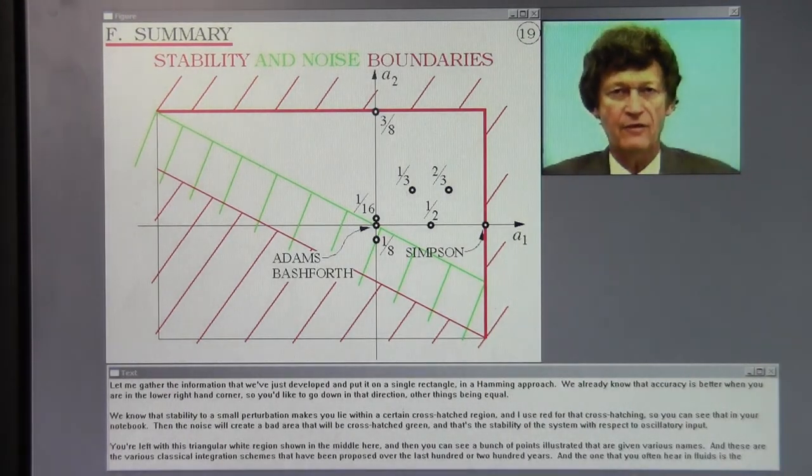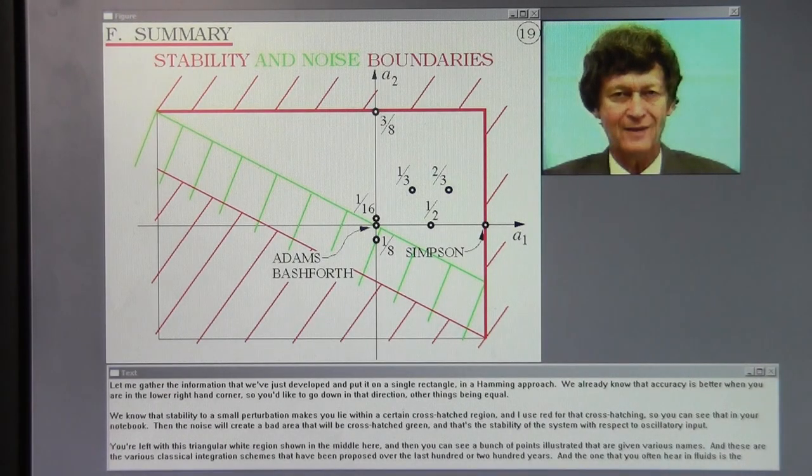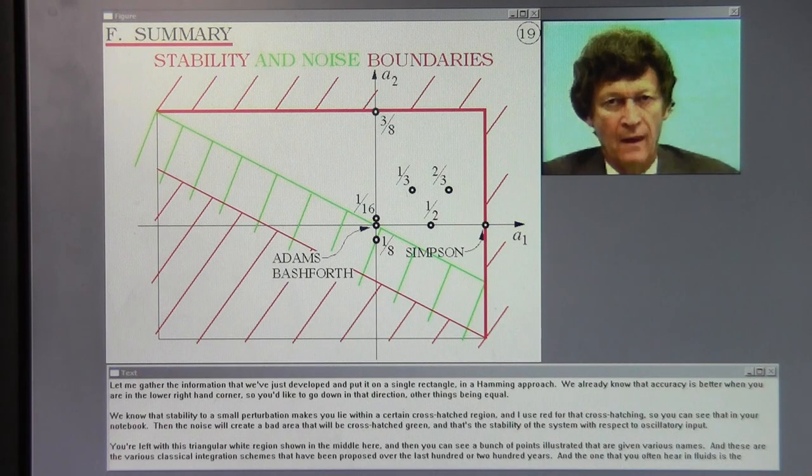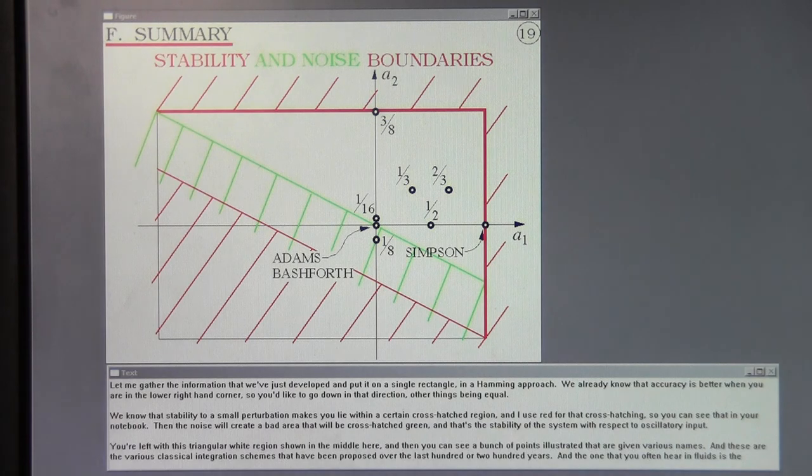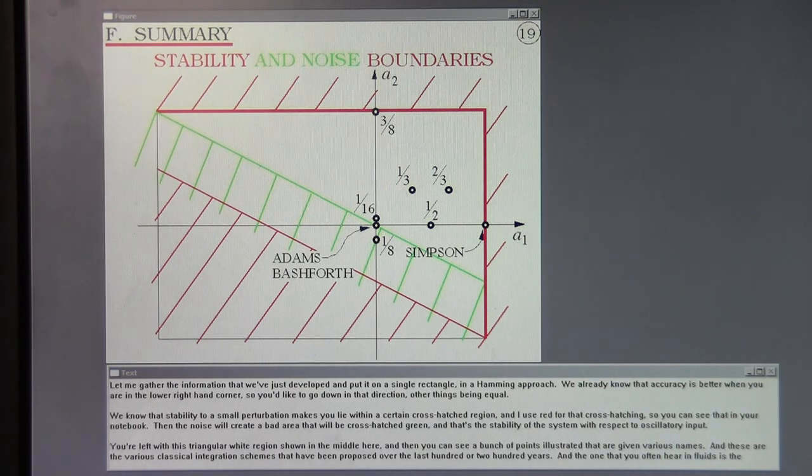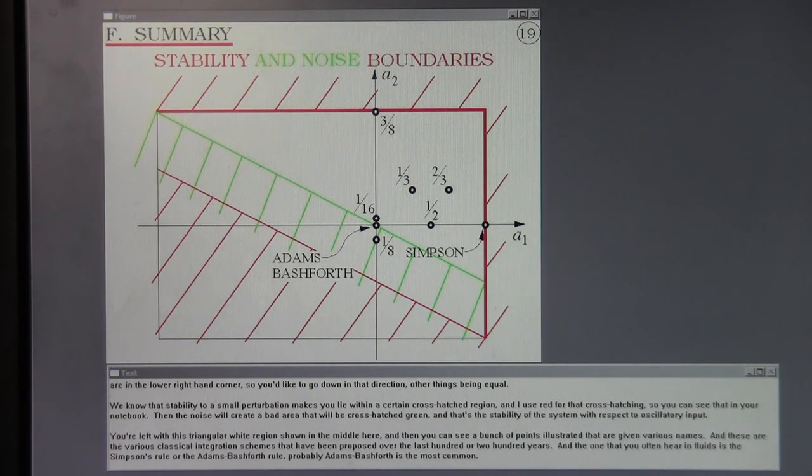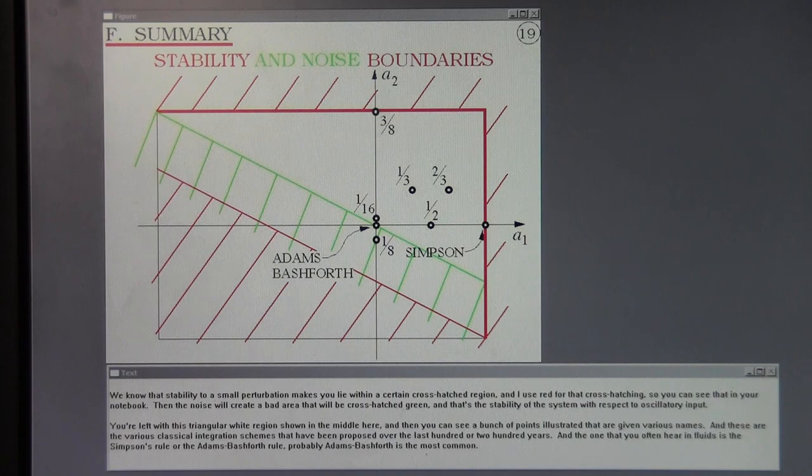Let me gather the information that we've just developed and put it on a single rectangle in the Hamming approach. We already know that accuracy is better when you're in the lower right-hand corner, so you'd like to go down in that direction, other things being equal. We know that stability to a small perturbation makes you lie within a certain cross-hatched region, and I use red for that cross-hatching. Then the noise will create a bad area that will be cross-hatched green.